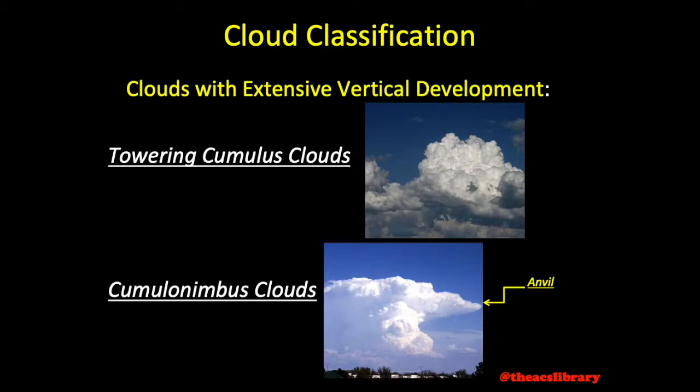An anvil may be formed as these clouds extend upward, bumping up against the stratosphere and expanding outwards. The anvil is often an indicator of terrible weather to come. Flight through, under, and adjacent to the anvil should be avoided.